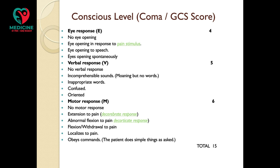In verbal responses, no response at all is scored as one. Incomprehensible moaning or groaning sounds are scored two. Use of inappropriate words is scored three. Confused speech is scored four. Well-coordinated, oriented speech is scored five.